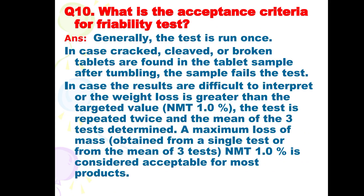Next is: what is the acceptance criteria for the friability test? Generally, the test is run once. In case cracked, chipped, or broken tablets are found in the tablet sample after tumbling, the sample fails the test. In case the results are difficult to interpret or the weight loss is greater than the target value, the test is repeated twice and the mean of the three tests is determined. A maximum loss of mass of not more than 1% is considered acceptable for most products.